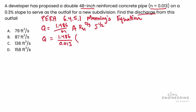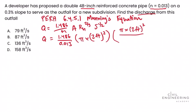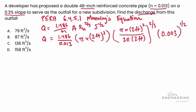Area equals pi times (2 feet) squared. The hydraulic radius R_H equals area over wetted perimeter, so that's pi times (2 feet) squared divided by 2 pi times 2 feet, and that quantity is raised to the two-thirds power. The slope S is given as 0.3%, which we convert to a decimal: 0.003, raised to the one-half power — don't forget to raise it to the one-half.